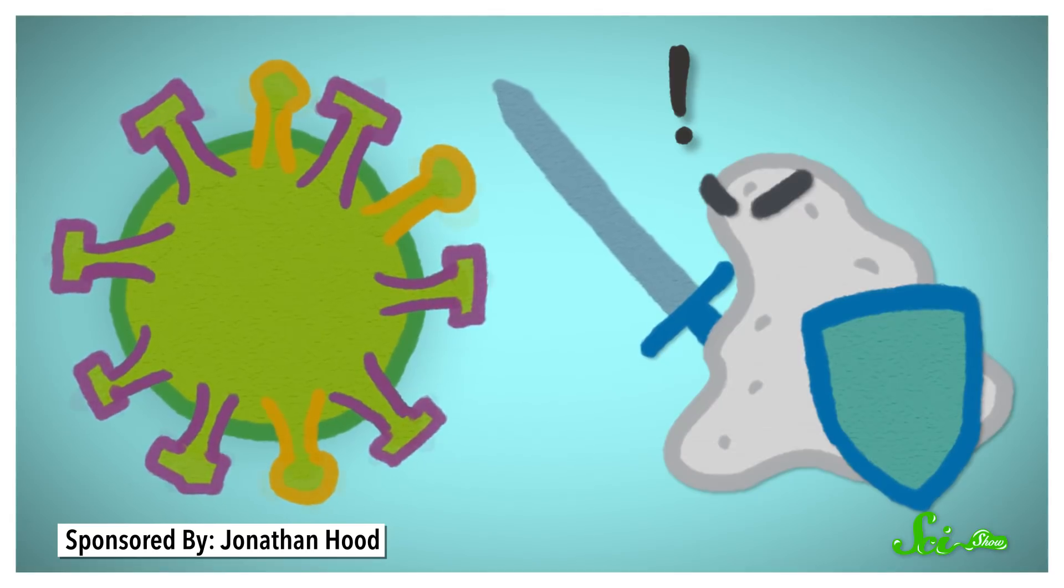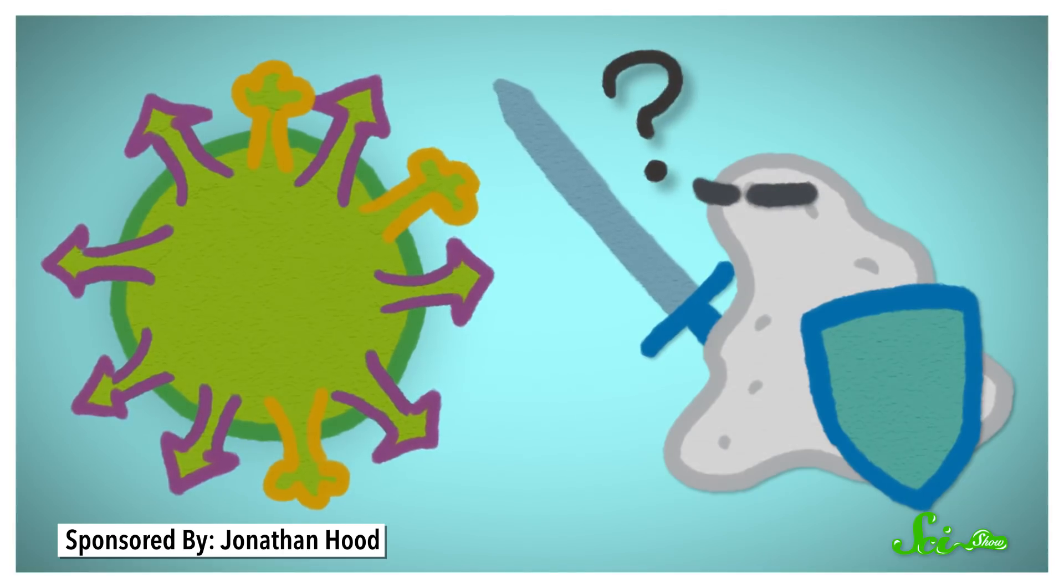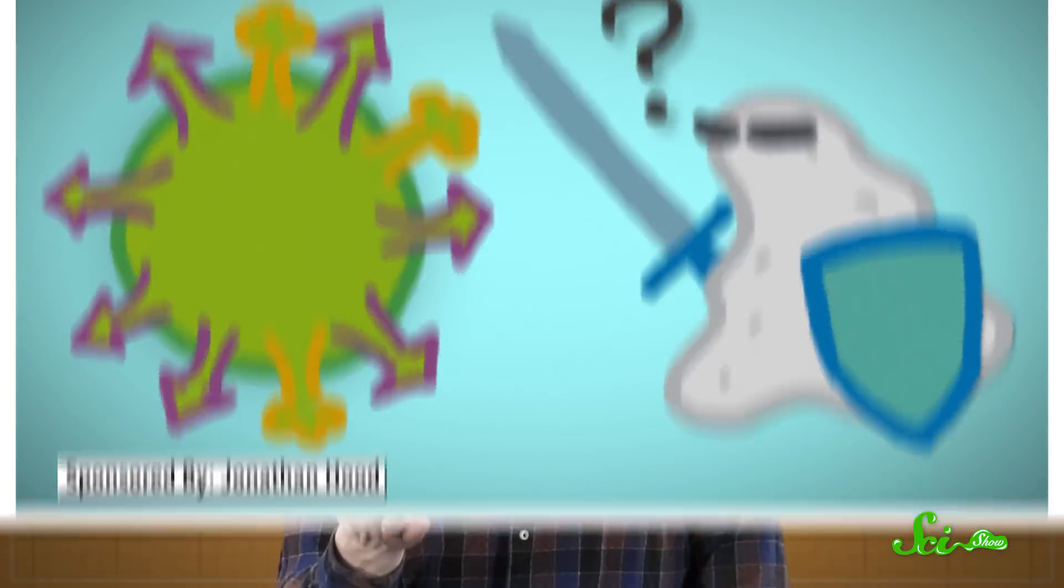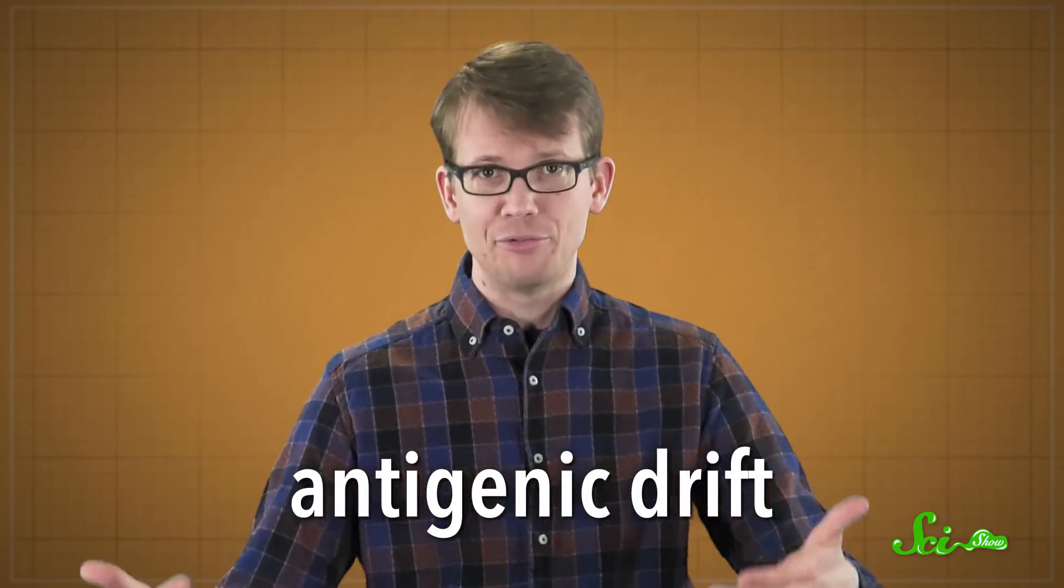But for that very same reason, if flu viruses mutate, changing what these proteins look like, the virus can escape your immune response and get off scot-free. This is called antigenic drift, and it's why you need a new vaccine every year.